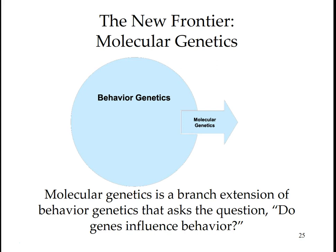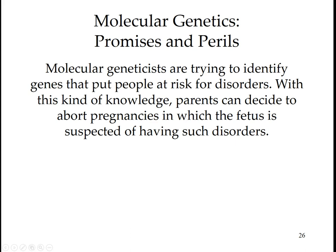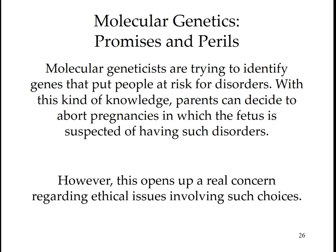Larson and Buss make the important point that genotype-environment correlations may be positive or negative — environments encourage and discourage the expression of specific genetic predispositions. Parents of very active children may try to get them to calm down, while parents of more passive children may try to foster liveliness. Molecular geneticists are trying to identify genes that put people at risk for disorders. With this knowledge, parents can decide about pregnancies where a fetus is suspected of having such a disorder; however, this opens up real concerns regarding ethical issues involving such choices.